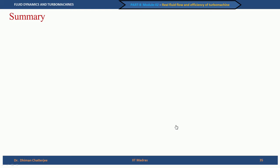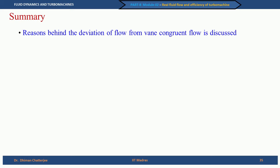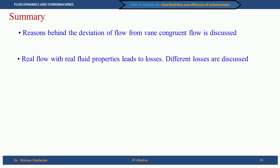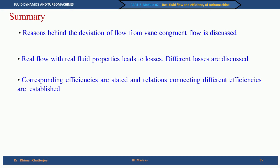To summarize: we have talked about the reasons behind the deviation of flow from vane congruent flow, real fluid flow leading to various losses, and the efficiencies related to these losses. In the next lecture, we will take up problems based on this week's discussion with step-by-step calculations. In the coming week, we will discuss these aspects of efficiencies in more detail in connection with pumps and hydraulic turbines. Thank you.